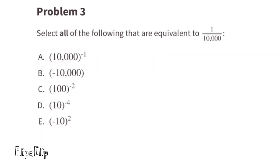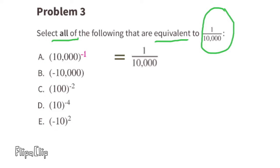Problem number 3. Select all of the following that are equivalent to 1 over 10,000. Option A: 10,000 to the power of negative 1. That is equivalent to 1 over 10,000, so I would select A.